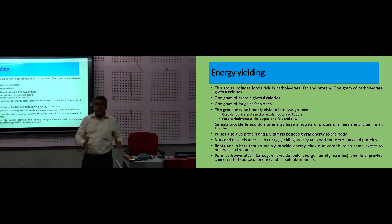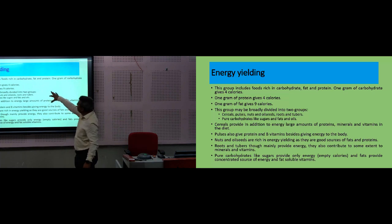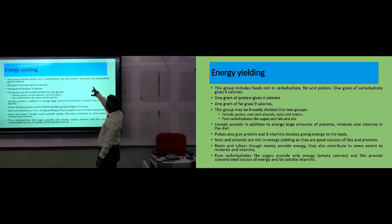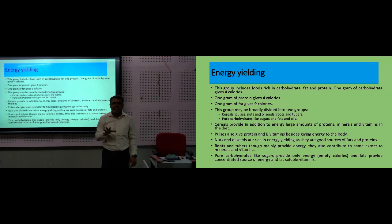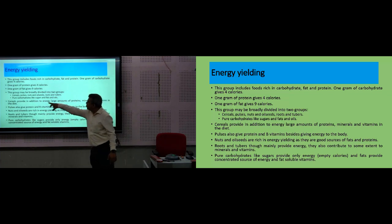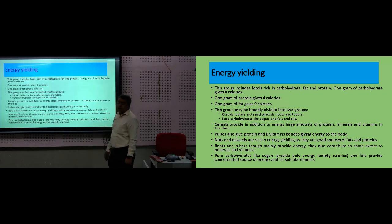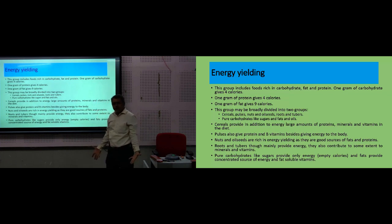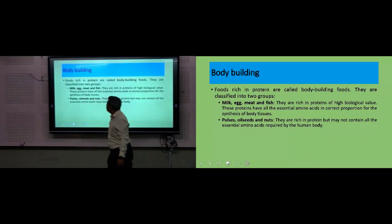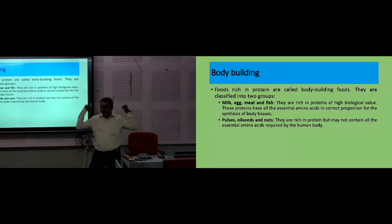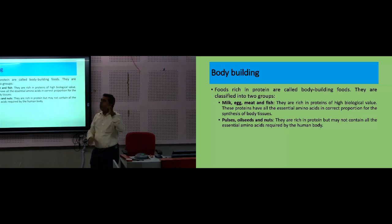How can you explain energy-yielding foods? Energy-yielding food groups are rich in carbohydrate, protein, and fat. One gram of carbohydrate gives 4 kilocalories, one gram of protein gives 4 kilocalories, and one gram of fat gives 9 kilocalories. Energy-yielding groups generally include cereals, nuts, all roots and tubers, and pure carbohydrates like sugar and fat. Cereals form a large part of the balanced diet. Pulses are rich in protein content. Nuts and oilseeds are rich sources of fat and protein.